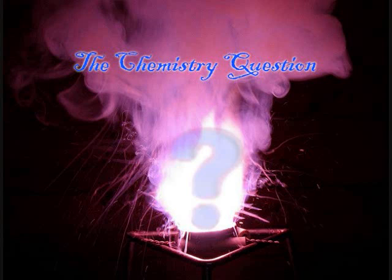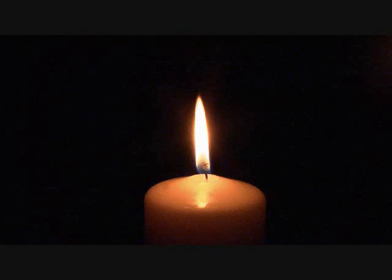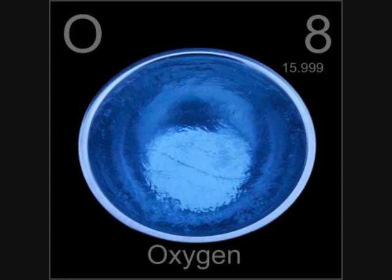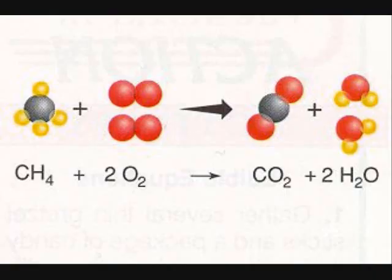Welcome to the chemistry question. Jordan here. We're all familiar with candles, and we also know that if we take candles and cover them with a jar or something else, the candles will go out because they use up all the oxygen — they need oxygen to continue burning. This is because a burning candle is an example of a combustion reaction, where an organic compound reacts with oxygen to produce carbon dioxide and water.